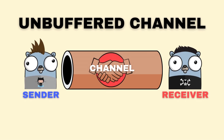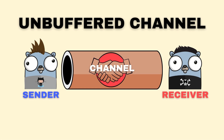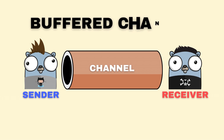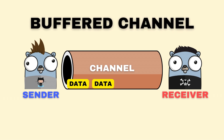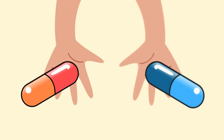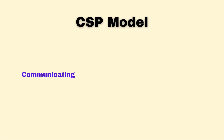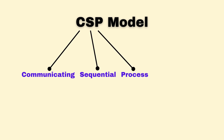You might be wondering: what if I need to send multiple values without waiting? That's where buffered channels come in. Be careful though — using a buffered channel is a quick fix for a blocking issue, not a permanent one. It's like taking a painkiller without treating the underlying condition. Let me introduce the CSP model.